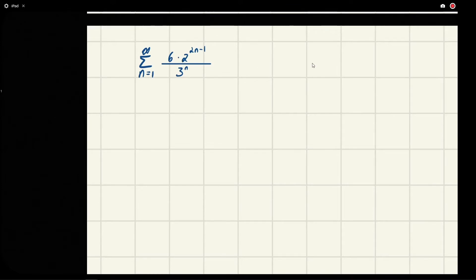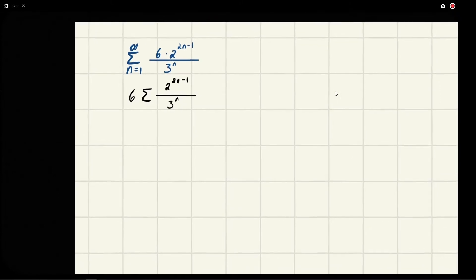One of the things we can do is we could pop the six out. I'm just going to write sigma—just know that n equals one and it goes to infinity. When we do that, we get 2 to the 2n minus 1 over 3^n. Be aware that we can do this because of limit laws; we can pop constants out like that when they're multiplied.